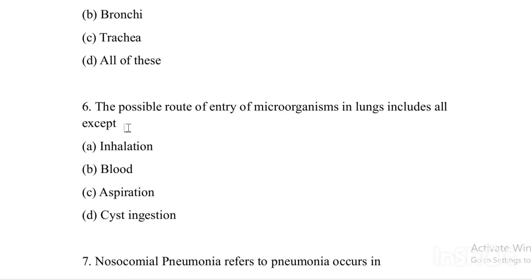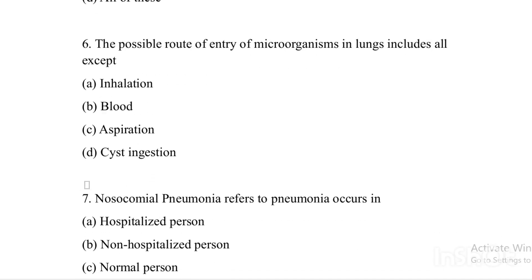Next question: The possible routes of entry of microorganisms into the lungs include all except — Option A: inhalation. Option B: blood. Option C: aspiration. Option D: cyst ingestion. The answer is Option D, cyst ingestion. The other routes — inhalation, blood, and aspiration — are all valid routes of entry.